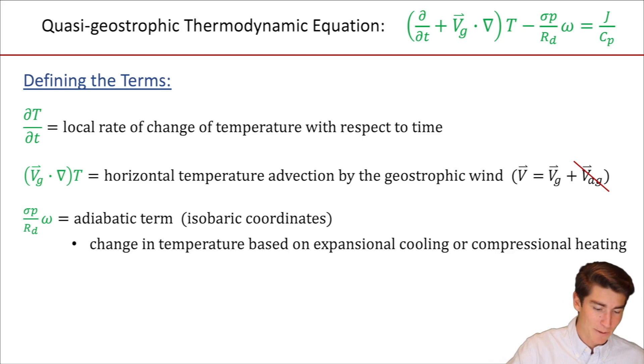Next term, sigma p over Rd times omega. This is our adiabatic term. And luckily, even though the symbols change, it still means the exact same thing. Change in temperature based on expansional cooling or compressional heating.